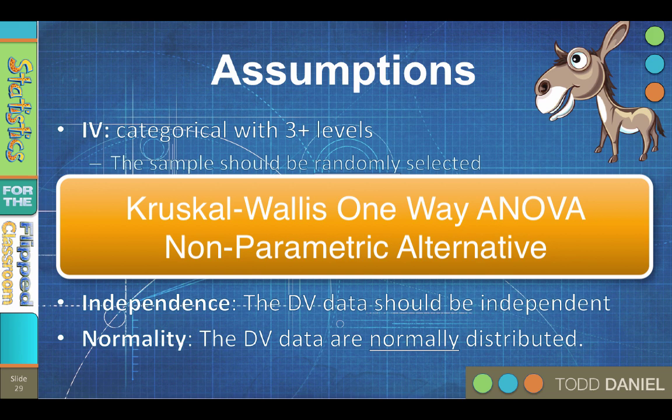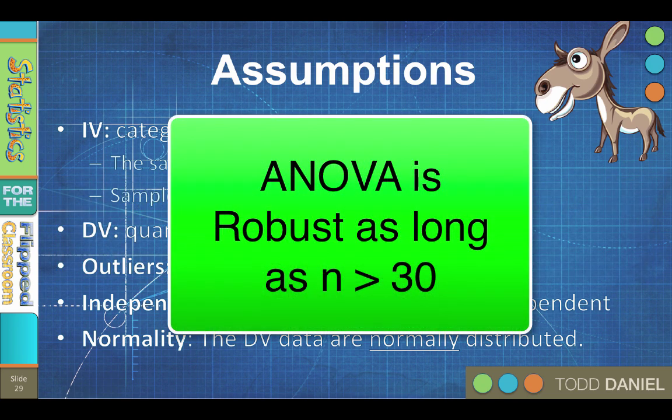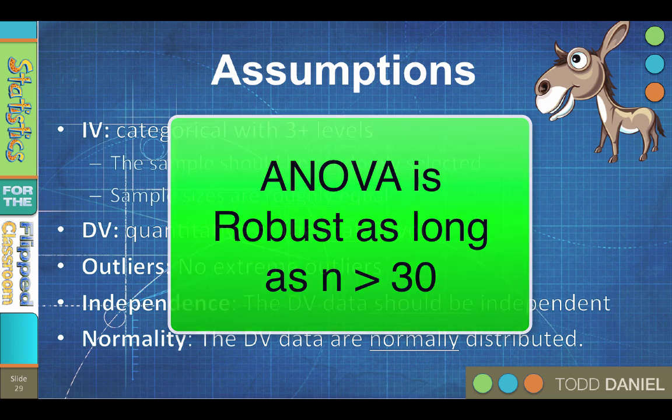However, the parametric one-way ANOVA that we are learning about now is robust as long as there is the minimum of 30 subjects in each sample. Robust means that the type 1 error rate doesn't increase if the assumptions are violated.